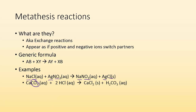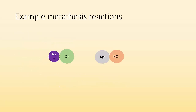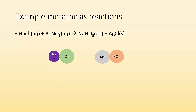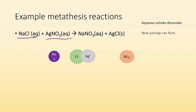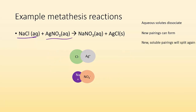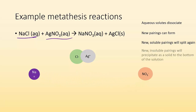Here's another example where CO3 ends up with H instead of calcium — partners switch. Let me visualize it: we have sodium chloride aqueous and silver nitrate aqueous becoming sodium nitrate aqueous and silver chloride solid. The first thing that happens is the aqueous solutes dissociate — they break apart into separate ions and are able to move about and meet new ions. New soluble pairings stay dissolved because they're soluble.